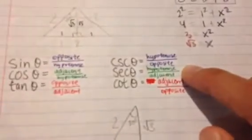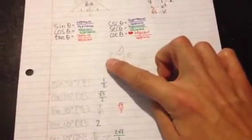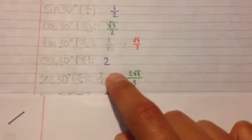Secant of 30 or pi over six is equal to the hypotenuse over the adjacent side. So two over the square root of three. Again, just like the tangent, this is technically correct, but you want that to be rationalized on the bottom. In order to rationalize the denominator, same thing as before, multiply both sides of the fraction by the square root of three. So you're left with two times the square root of three over three.